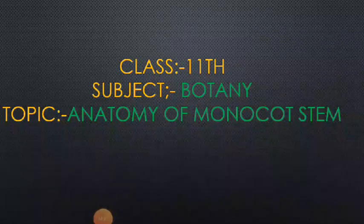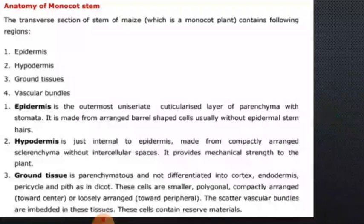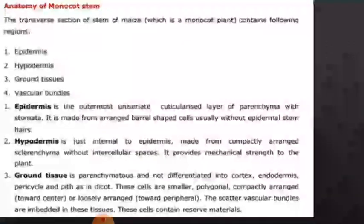Today's topic of botany is the anatomy of the monocot system. As far as we have dealt, monocot is a group of plants. The transverse section of the stem of maize, which is a monocot, contains the following regions.